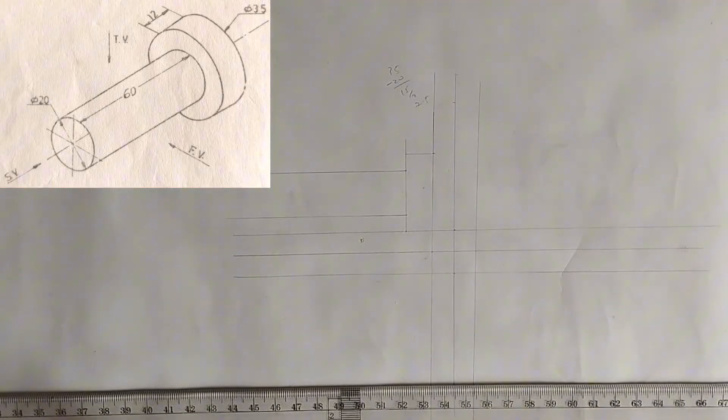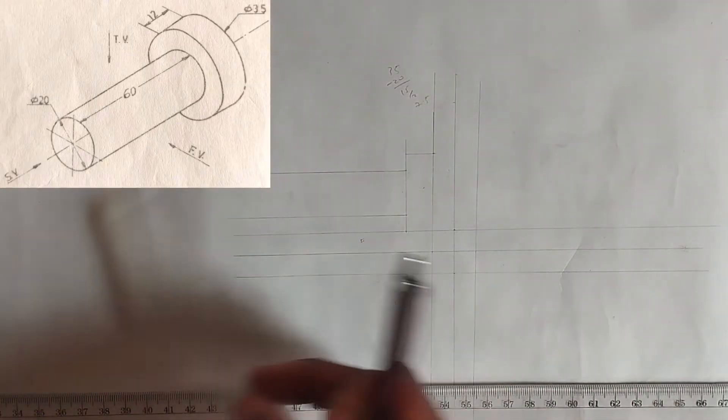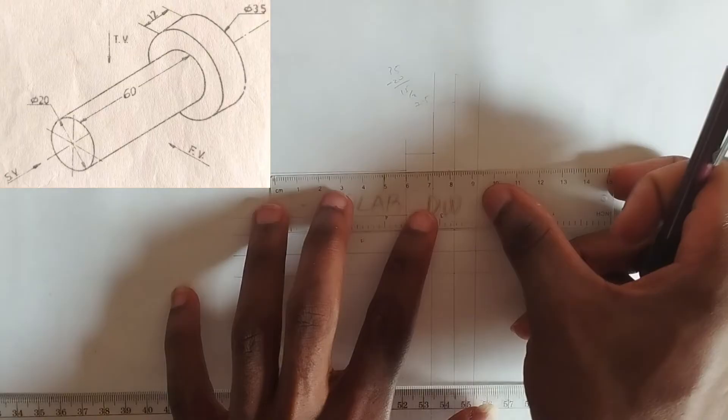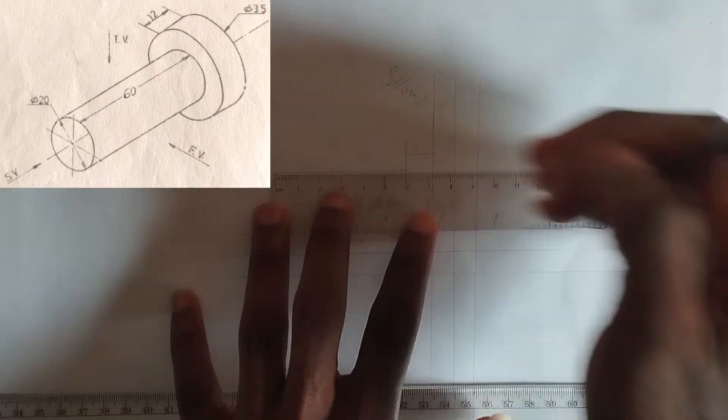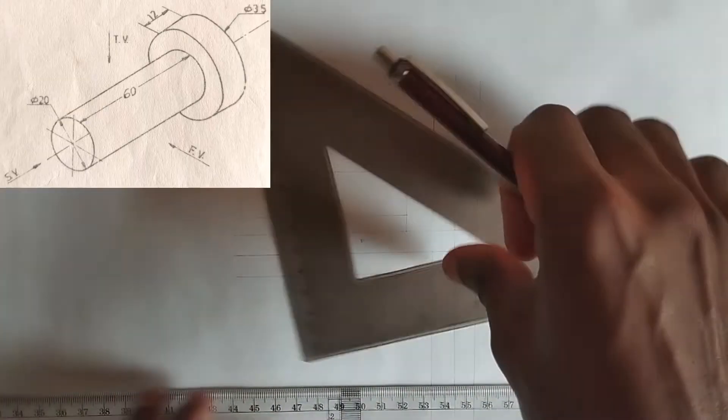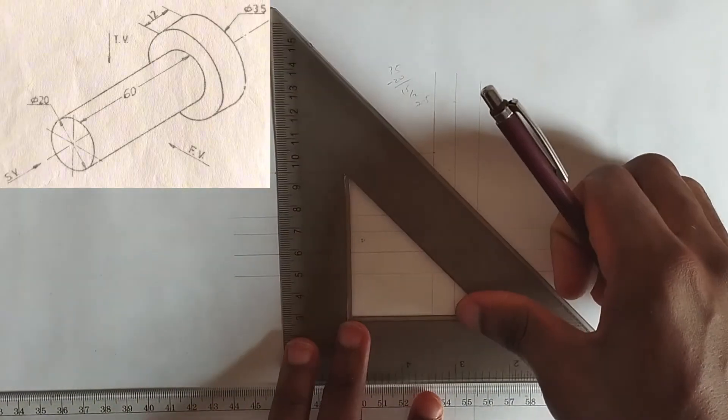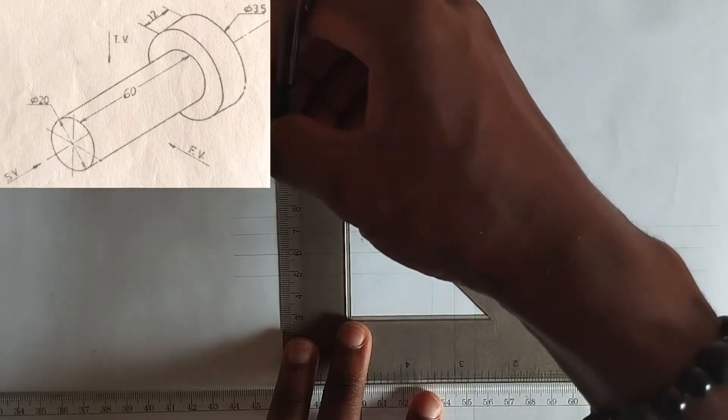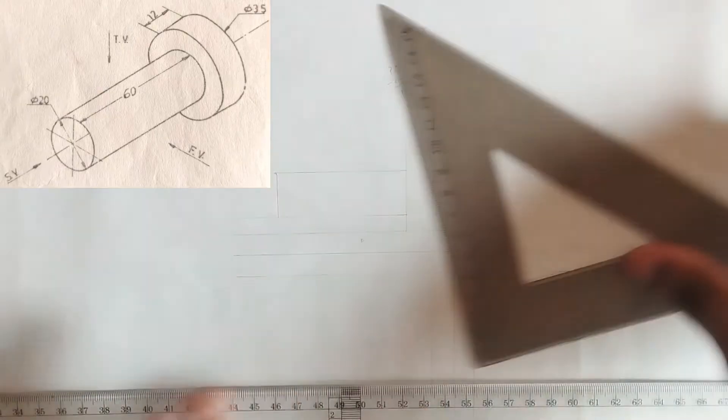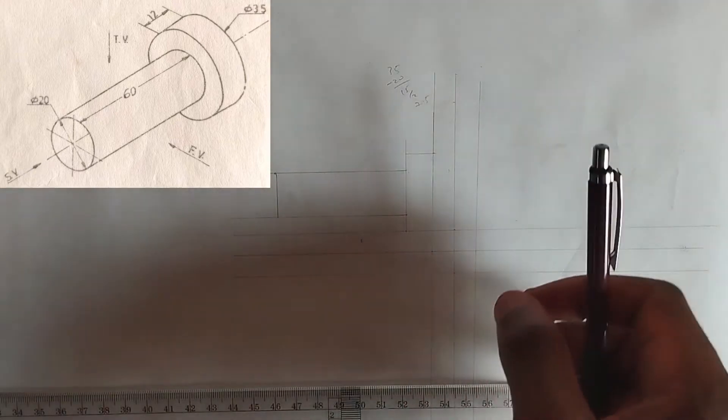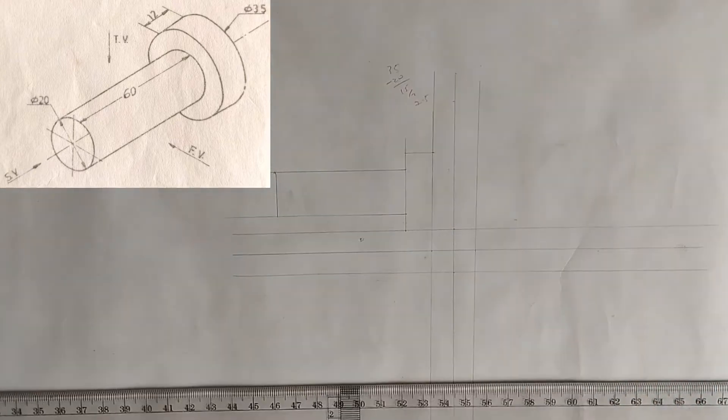We have been told that it's 60mm, which is the length. So I'll pick my 60mm like this and draw my straight line like this. So we have taken it out like this.